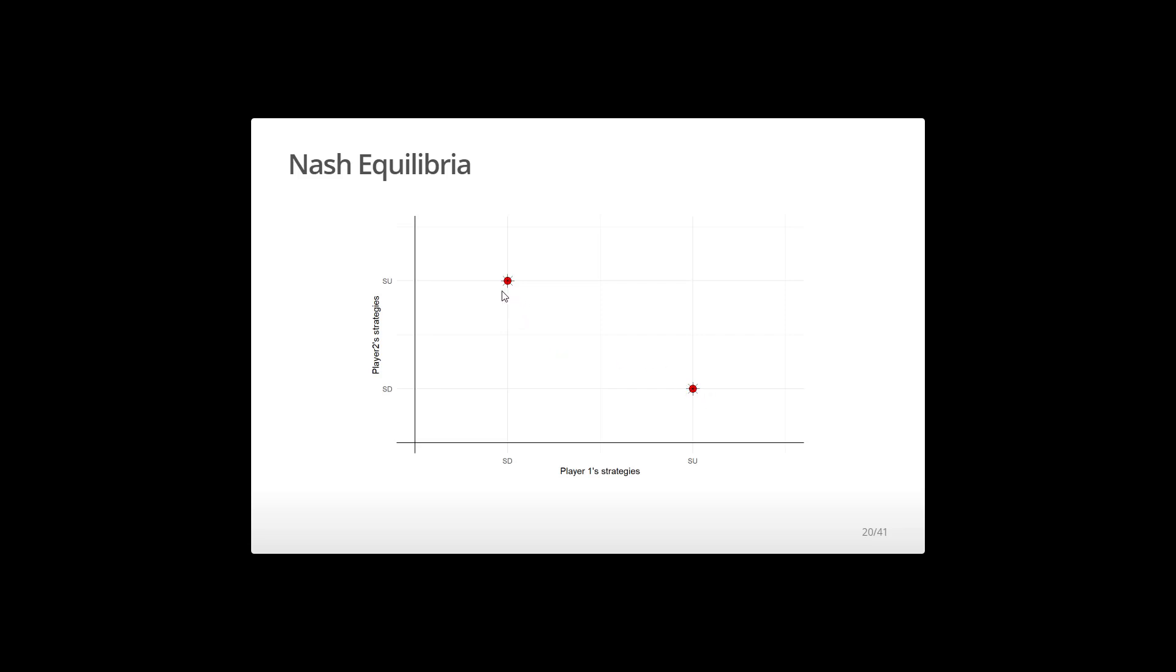So we have two Nash equilibria in this game as well. So they are at player one speeds up, player two slows down, so here. And they are at player one slows down, player two speeds up, this other dot. So two Nash equilibria in this game, and we arrived at it by drawing best response functions. This was much faster. I don't know if you noticed it, but if you can construct best response functions, the speed picks up.